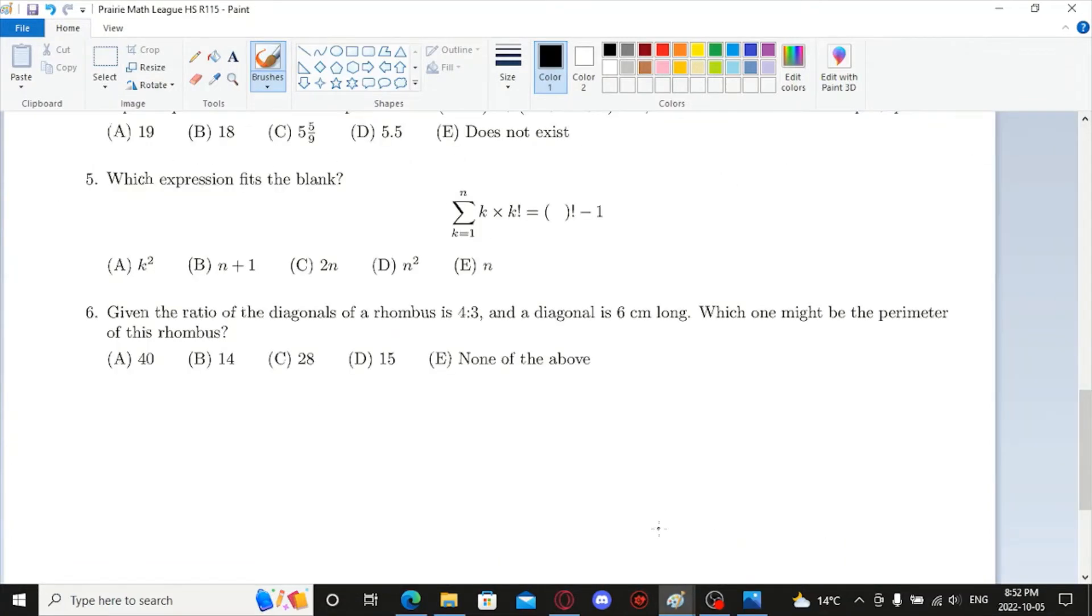Round 115, Question 6. Given the ratio of the diagonals of a rhombus is 4 to 3, and a diagonal is 6 centimeters long. Which one might be the perimeter of this rhombus? 40, 14, 28, 15, or none of the above.